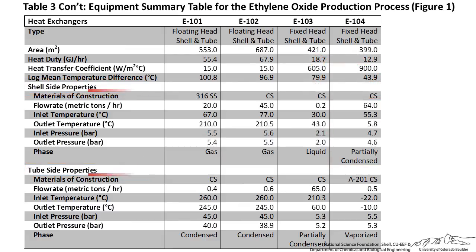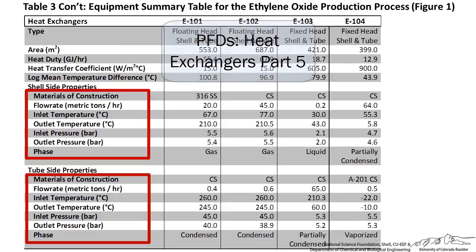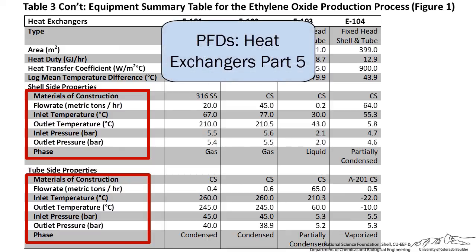In the next lecture, we'll discuss choosing the materials of construction for both the shell and tube-side of the heat exchanger, as well as specifying other important information such as flow rate, temperature, pressure, and phase of these streams.